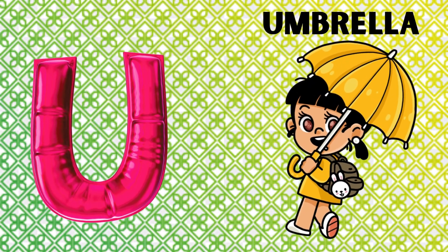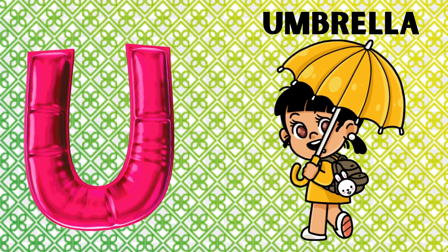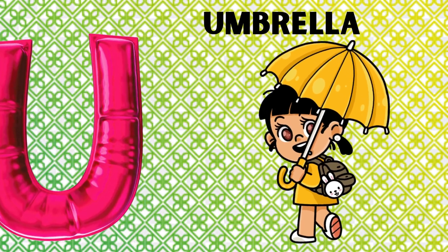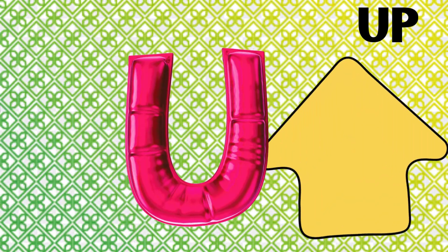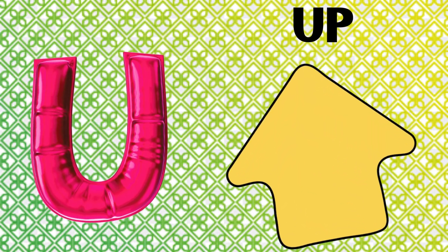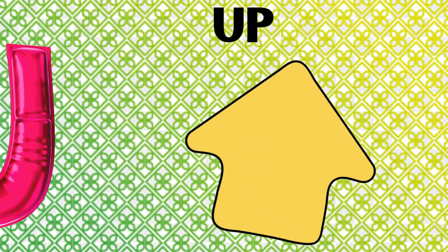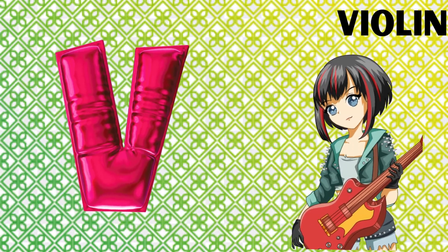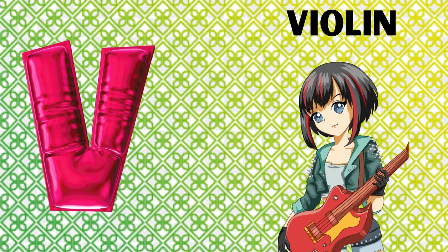U is for Umbrella. U, Umbrella. U is for Up. U, U, Up. V is for Violin.